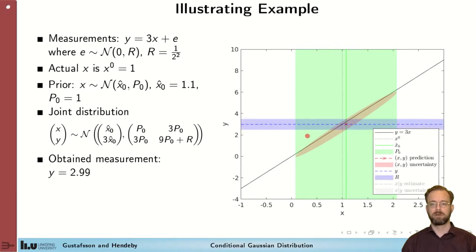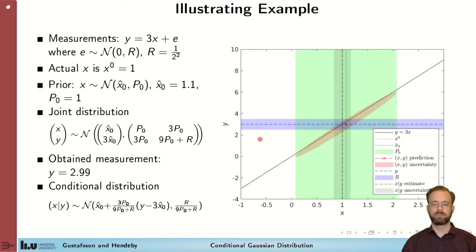If you now get an observation of Y here, the uncertainty based on the measurement noise indicated by this blue here. Then we can use the lemma to compute the conditional distribution of X given Y.